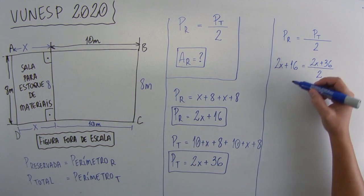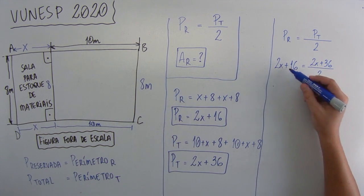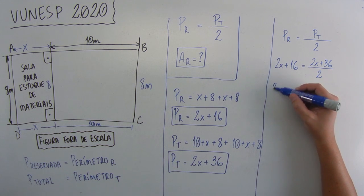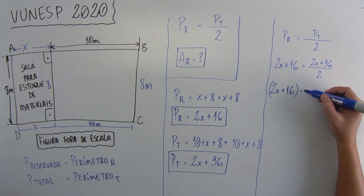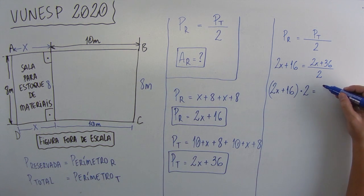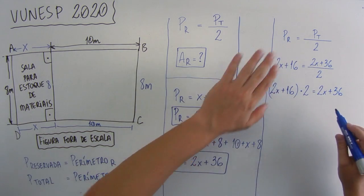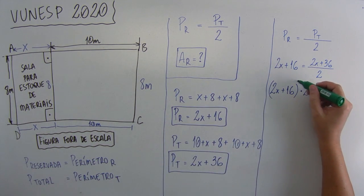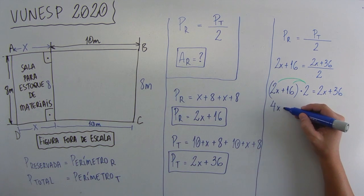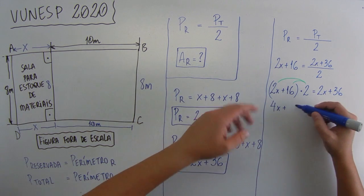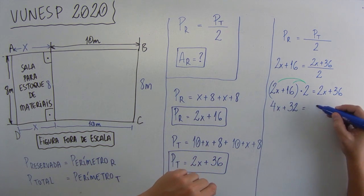Então, aqui, vamos multiplicar em cruz, vai ficar 2X mais 16 vezes 2, então vai ficar 2X mais 16 vezes 2, não esquece do parênteses, senão vai dar ruim, igual a 2X mais 36 vezes 1, que está aqui embaixo, nem vai aparecer. Vamos fazer a distributiva aqui. Aqui, 2X vezes 2 vai dar 4X mais 16 vezes 2, vai dar 32 igual a 2X mais 36.